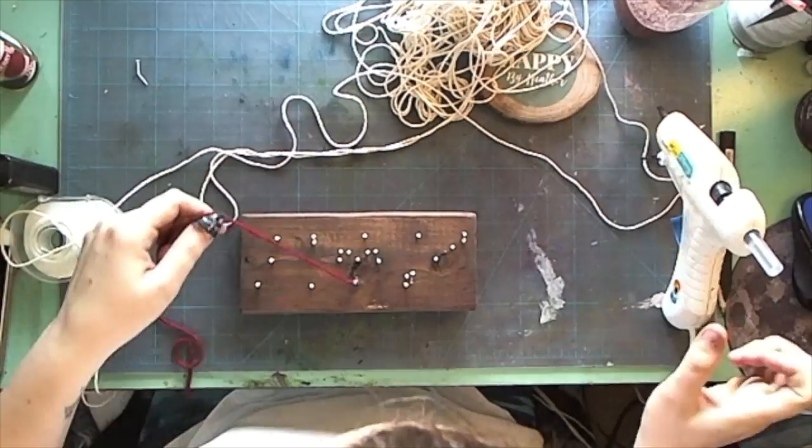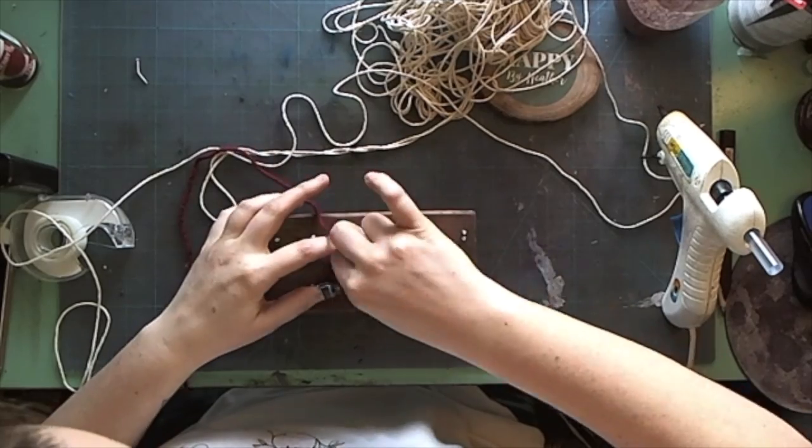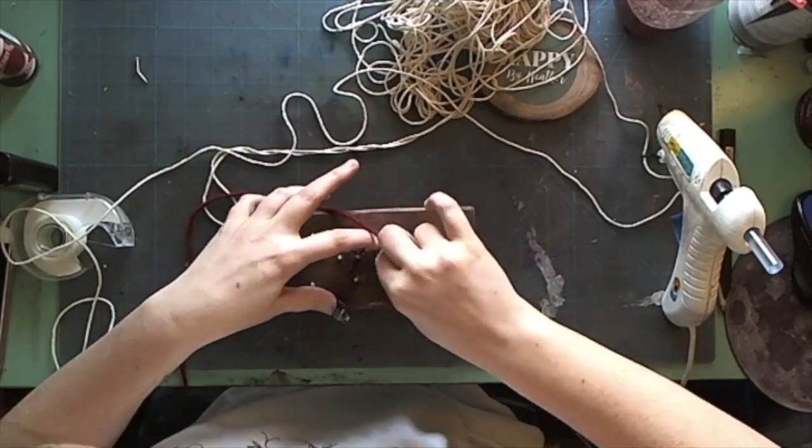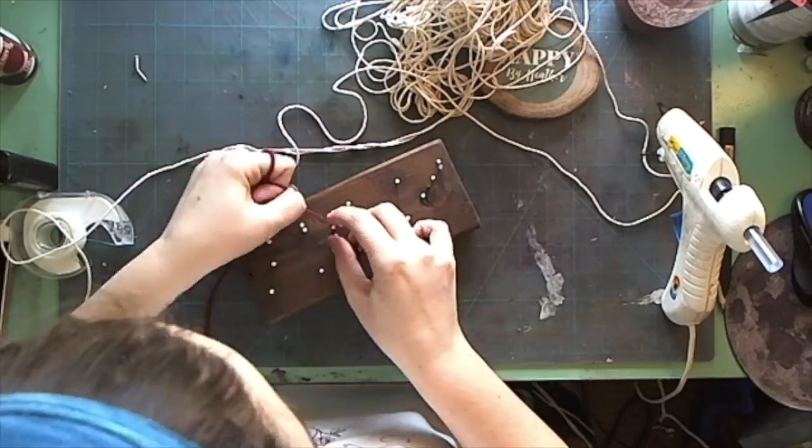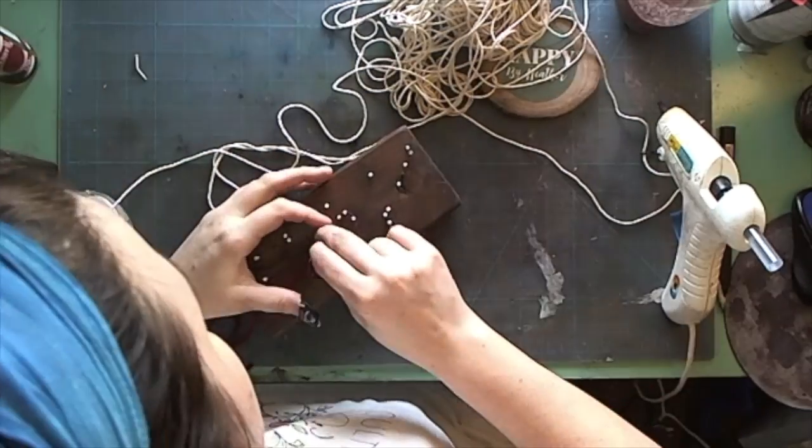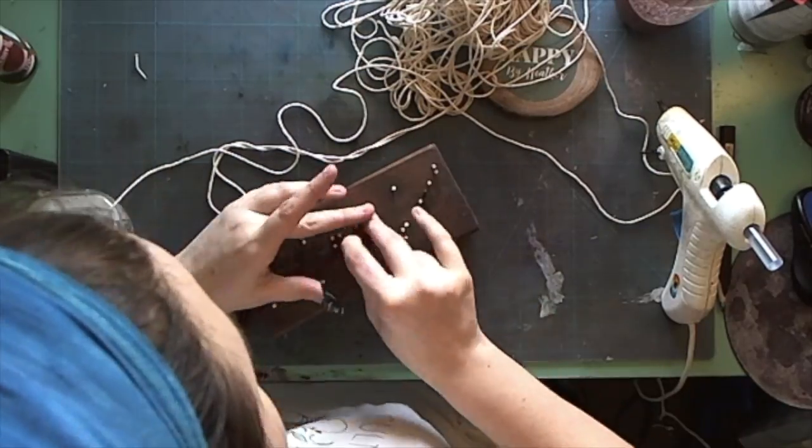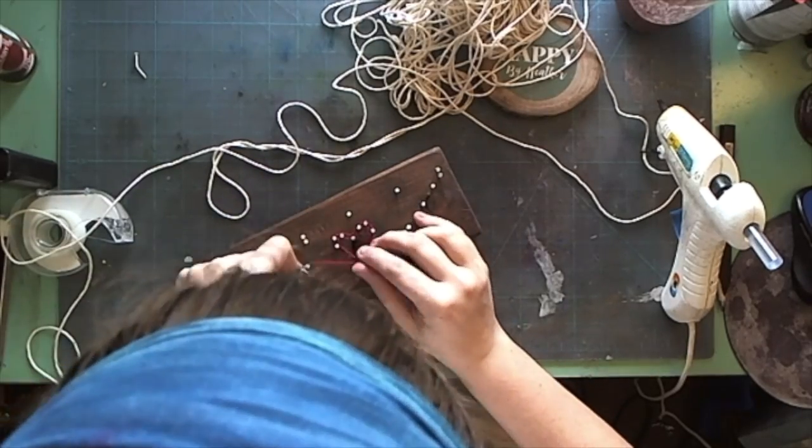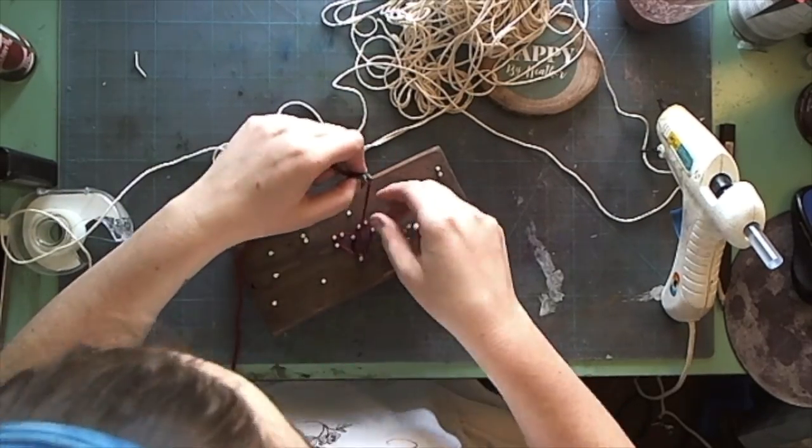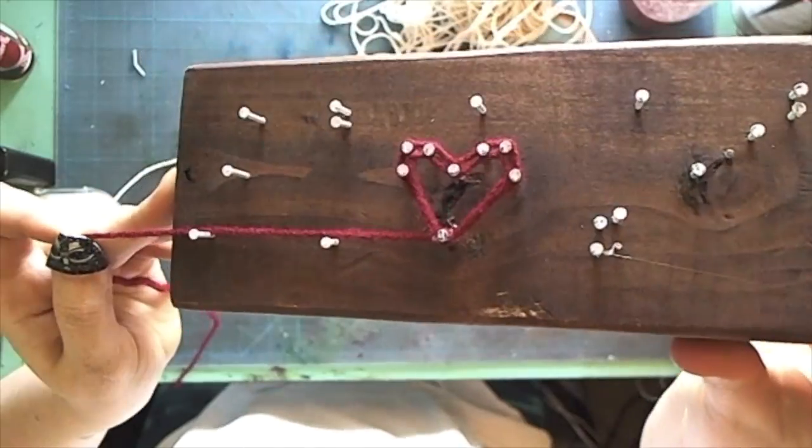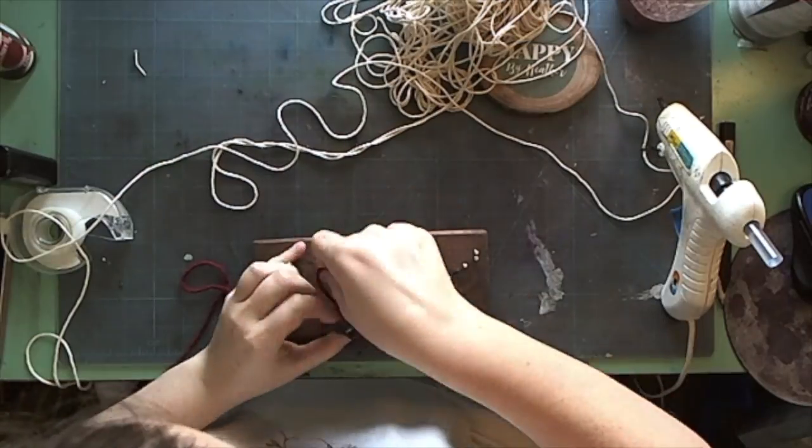I'm then gonna take the string and go around each of the nails one more time, this time rotating the opposite direction around the nails, so it creates two strings kind of like a double outline.